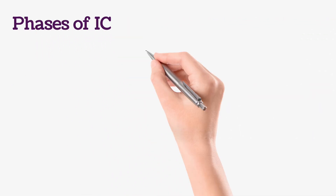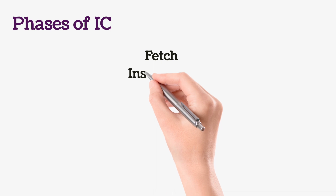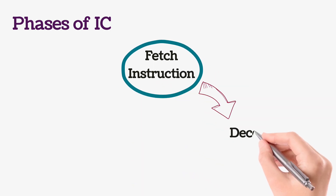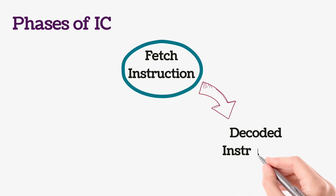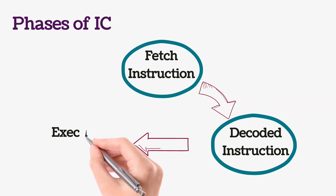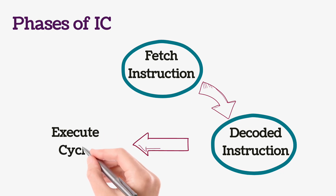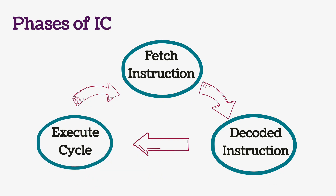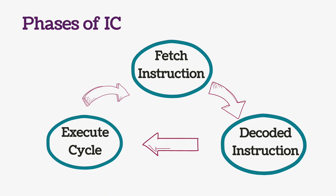When fetching the instruction, the CPU retrieves the instruction from memory and stores it in a register location. While decoding, the CPU determines which system components are required for the execution of the instruction, identifying the parameters for a successful execution. And while executing the program, the CPU assigns the specific action to the relevant system component in order to carry out the initial program instruction, processing the actual data.